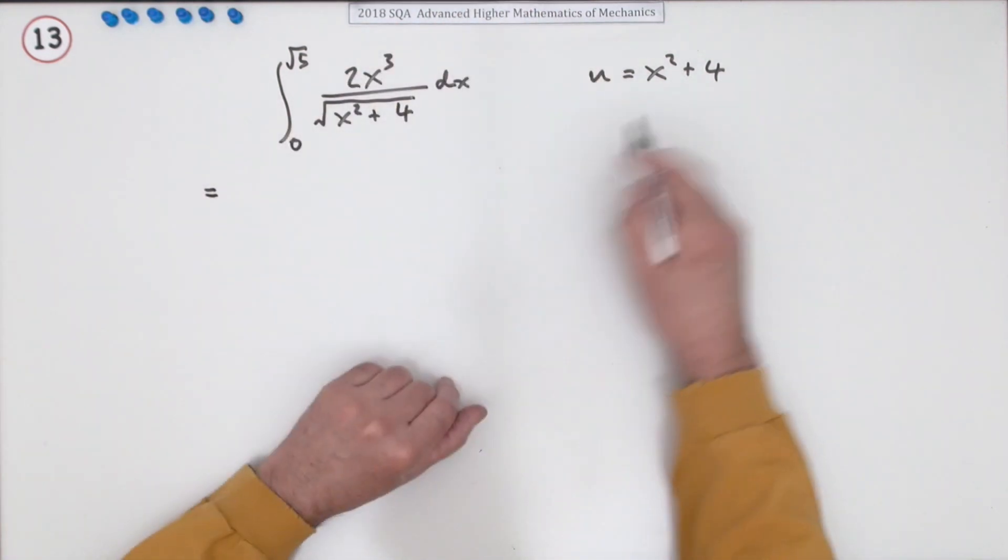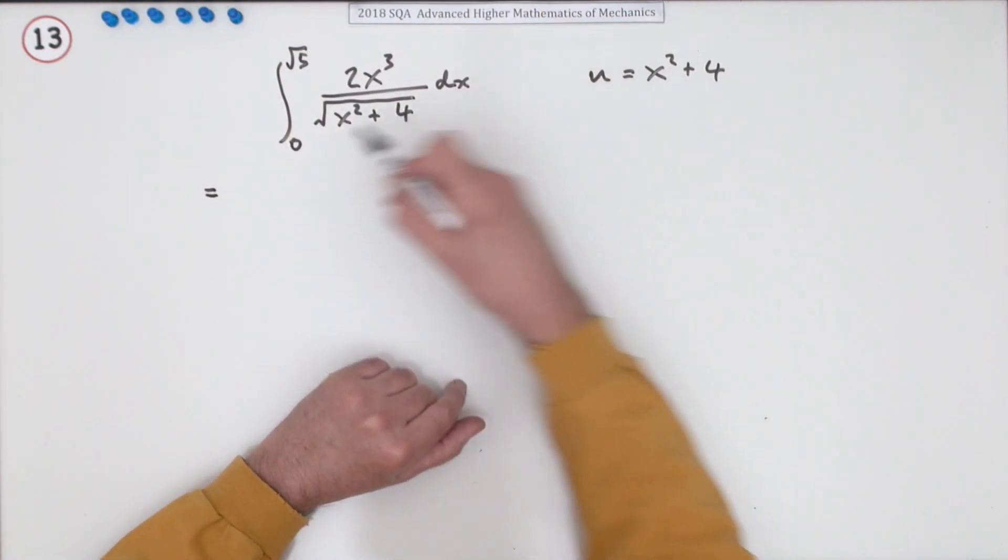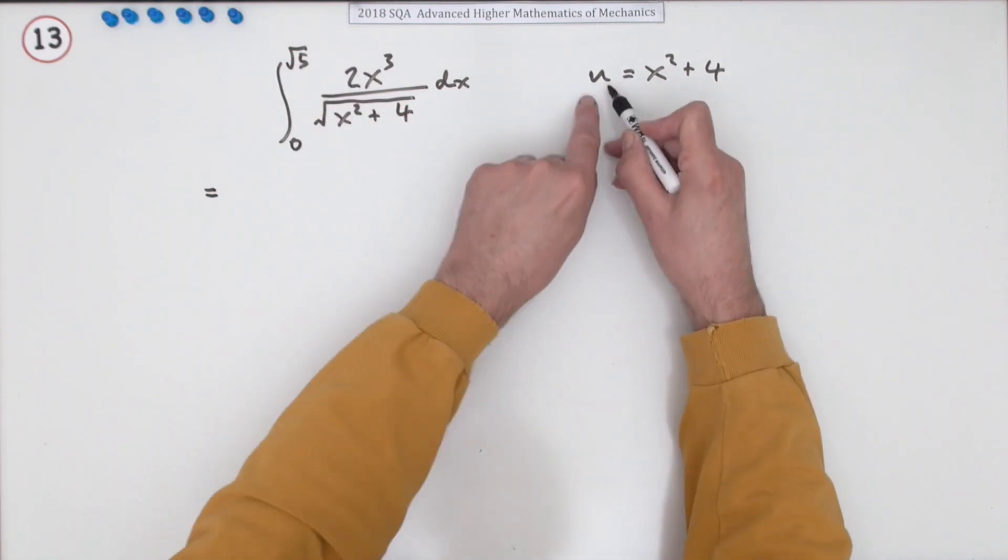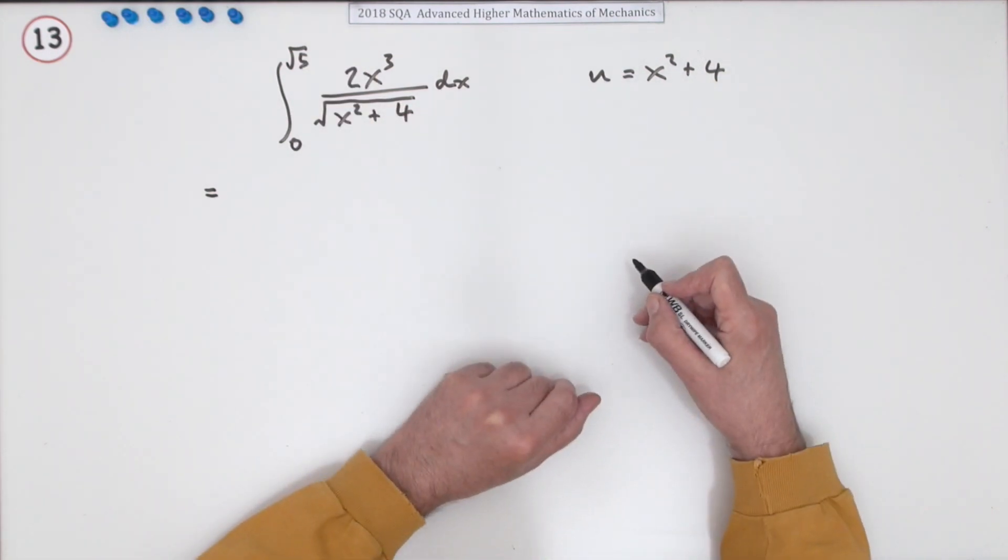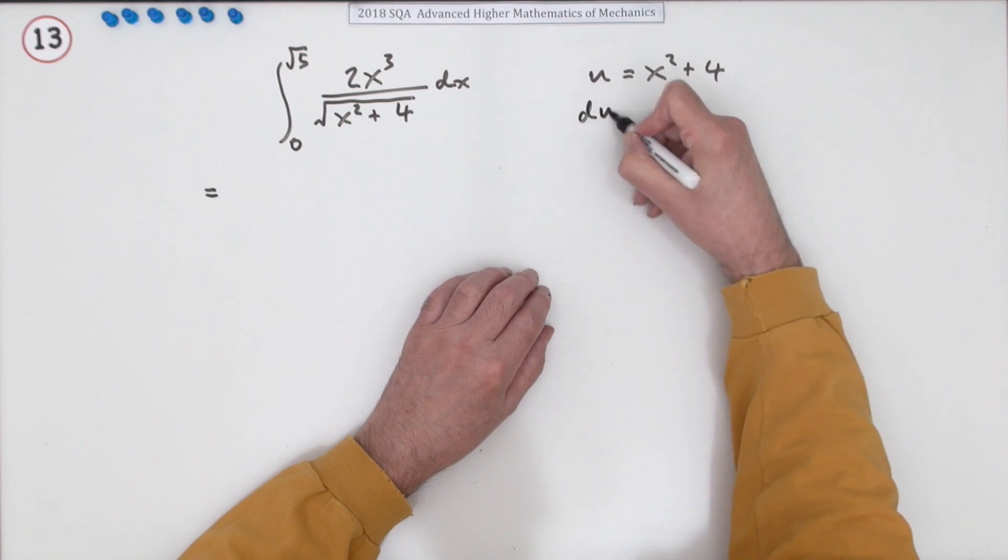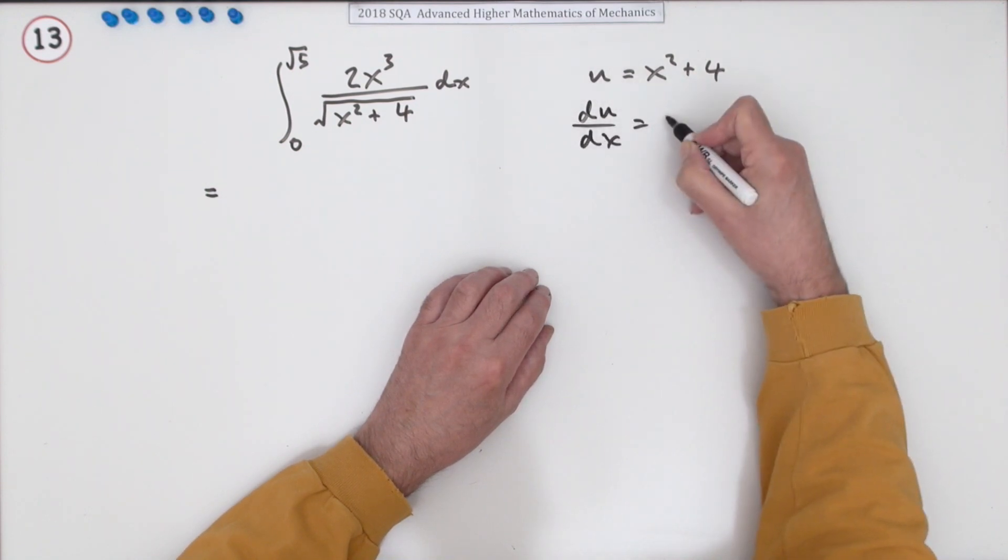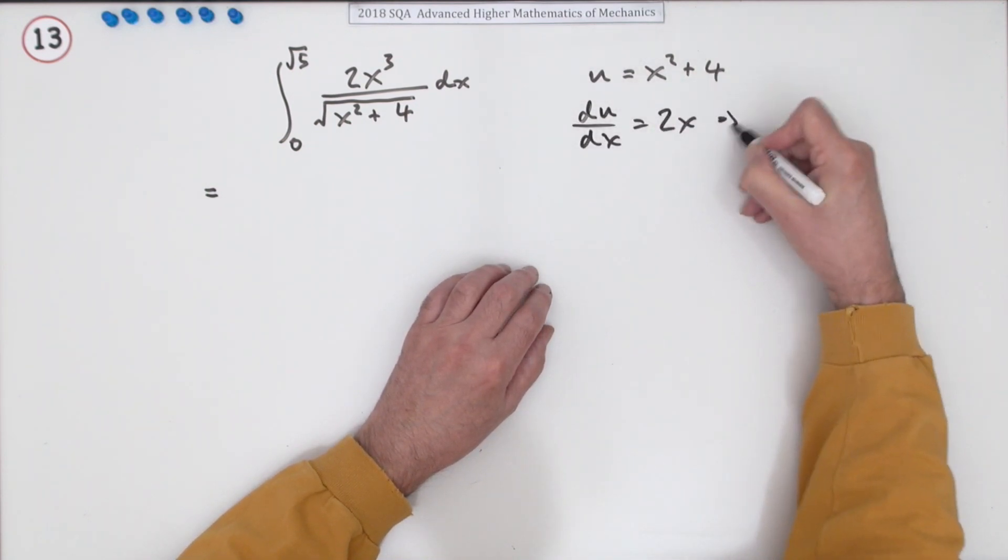First, if you're using this substitution, every x has to be changed to u, and all x values changed to u values. About the differential: du/dx will be 2x, so straight away dx will be replaced by du over 2x.